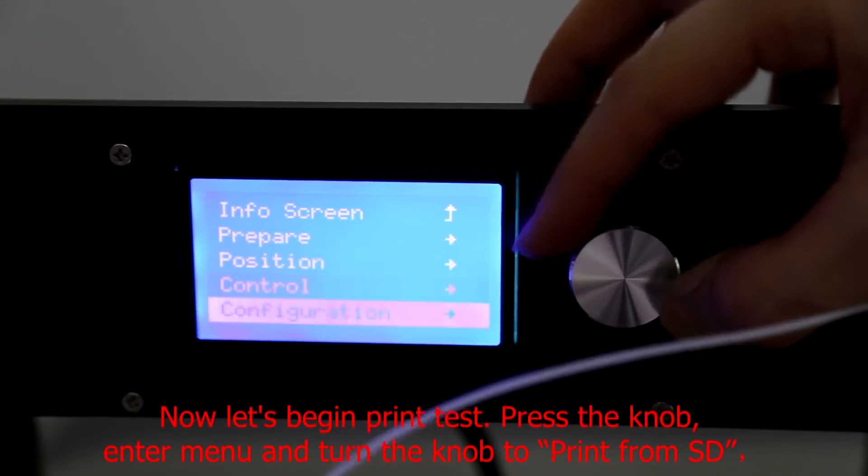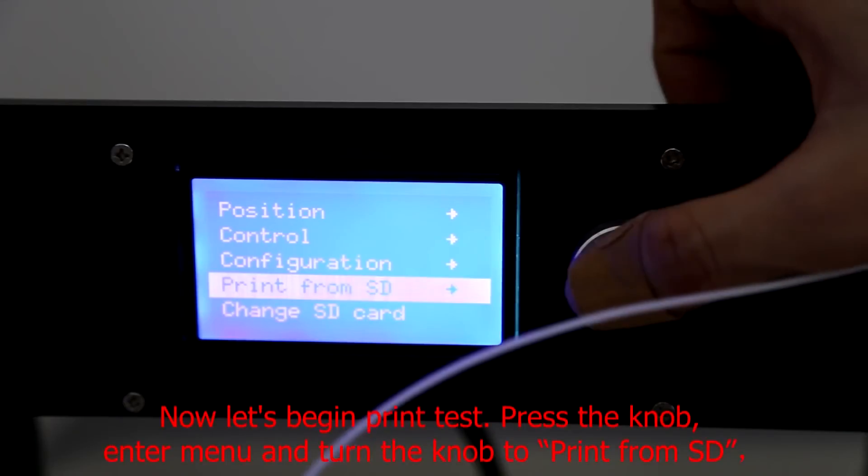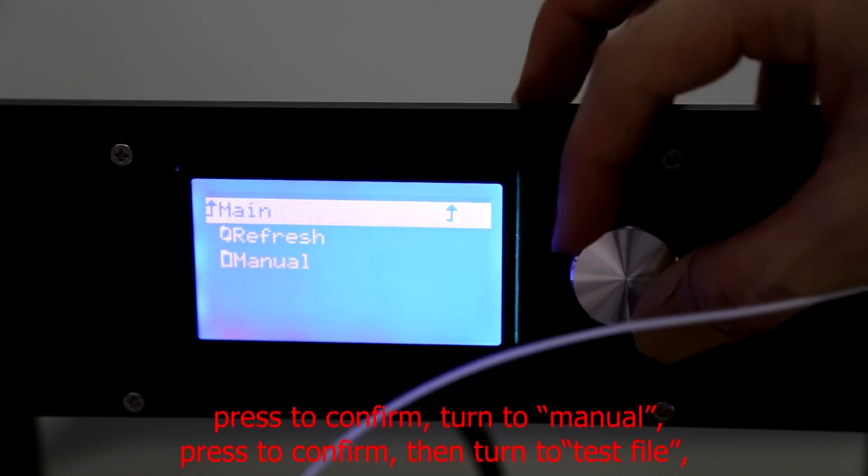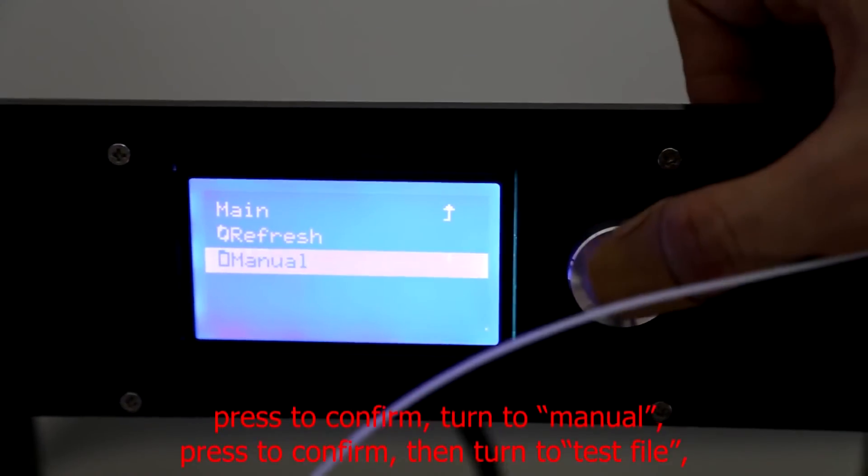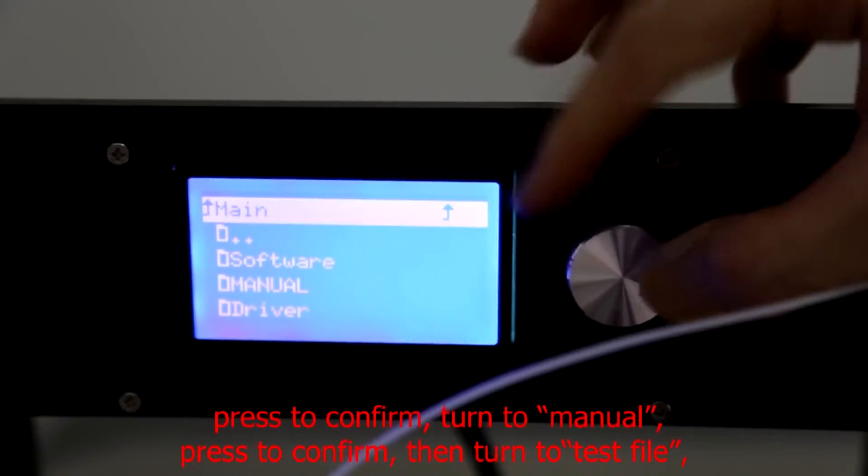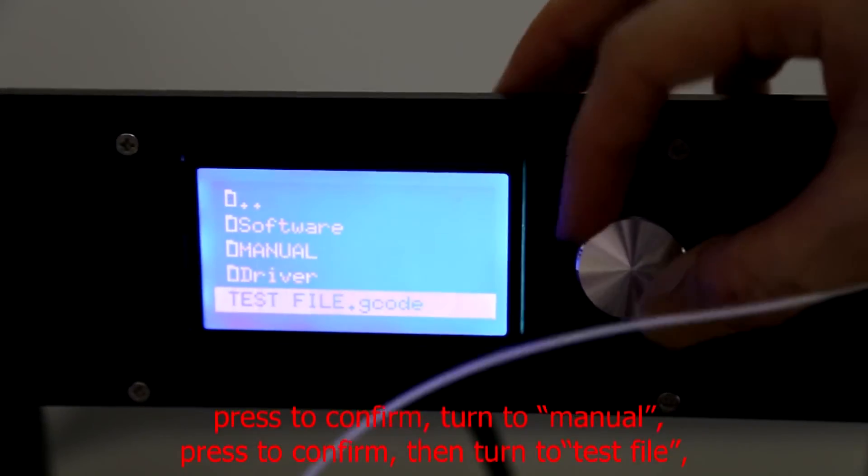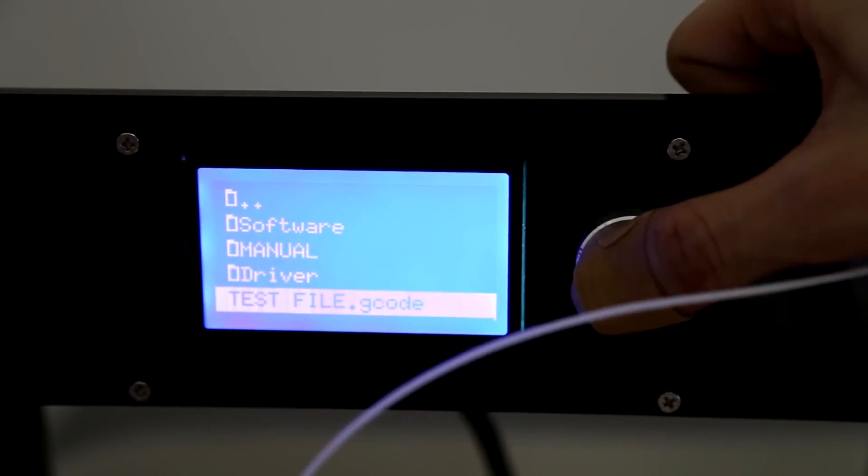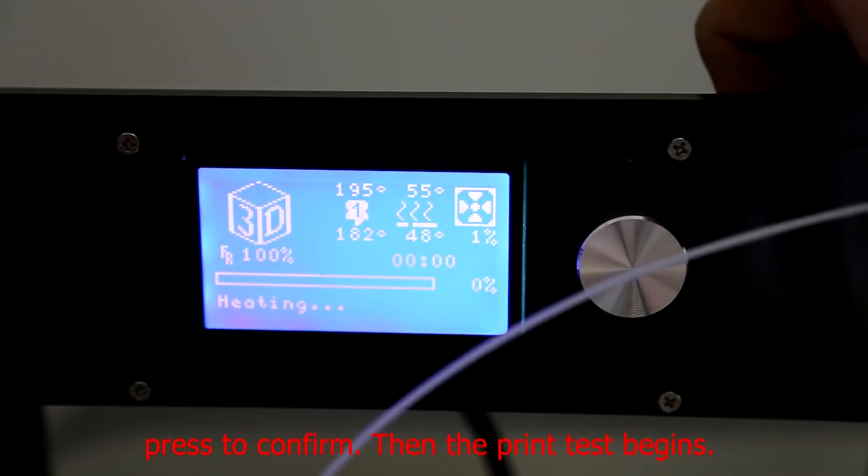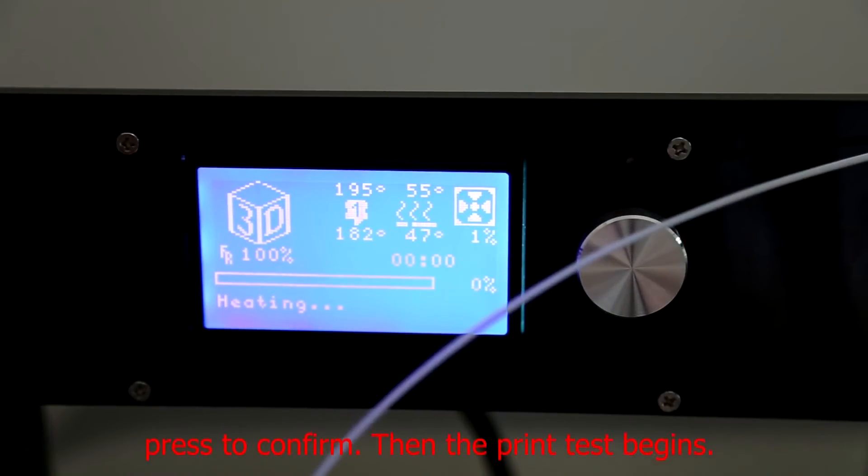Press the knob to enter the menu and turn the knob to Print from SD. Press to confirm, turn to the menu, press to confirm, then turn to the test file. Press to confirm, then the printer test begins.